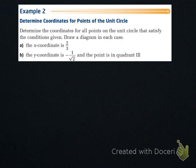Let's determine the coordinates for points on the unit circle. Given that the x-coordinate is 2/3, we use x² + y² = 1. Substituting: (2/3)² + y² = 1, so y² = 1 - 4/9 = 5/9.